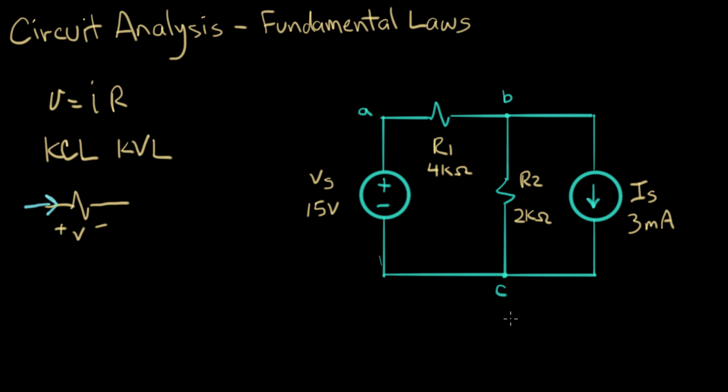Now we can also label some voltages on here. We'll label the voltages in orange. We'll call this V1 and we'll give it a plus sign here and a minus sign here and that's the voltage across R1. We'll give R2 a name.